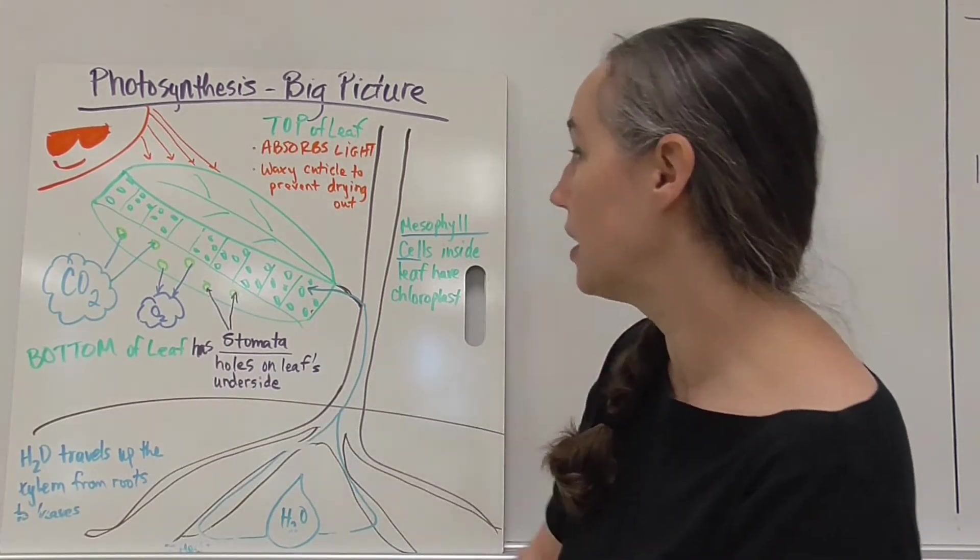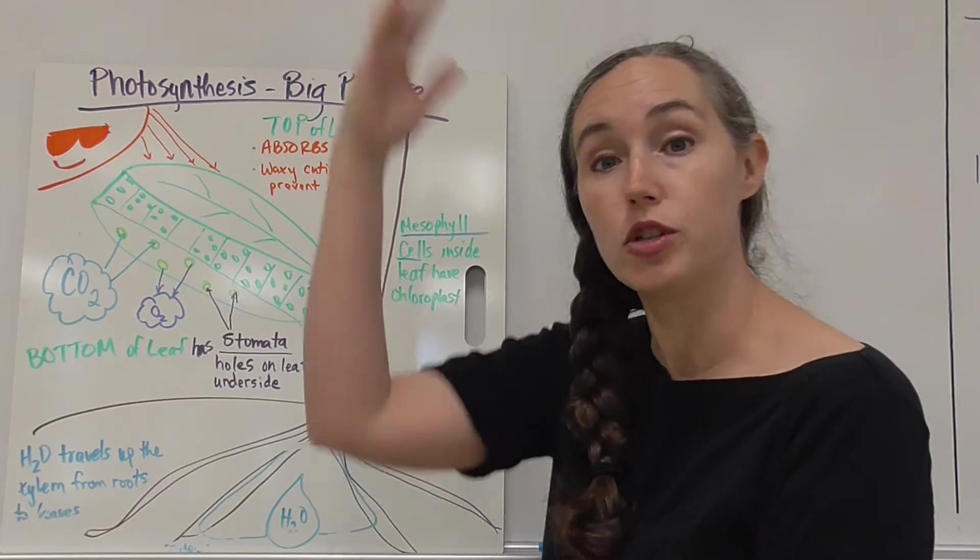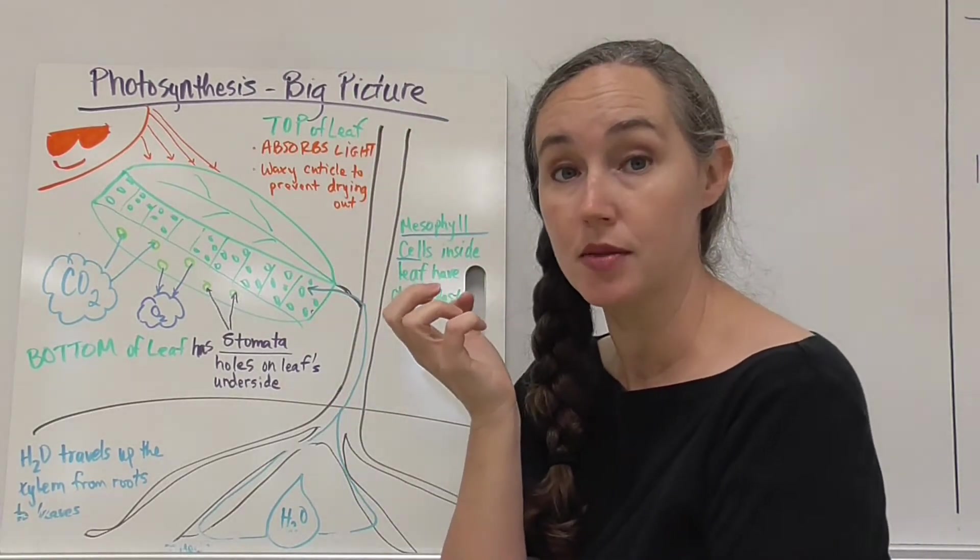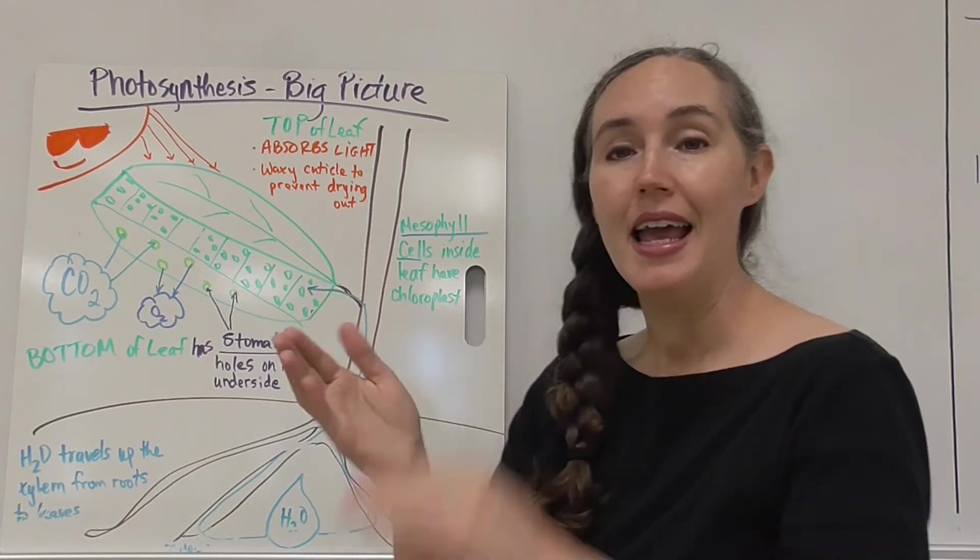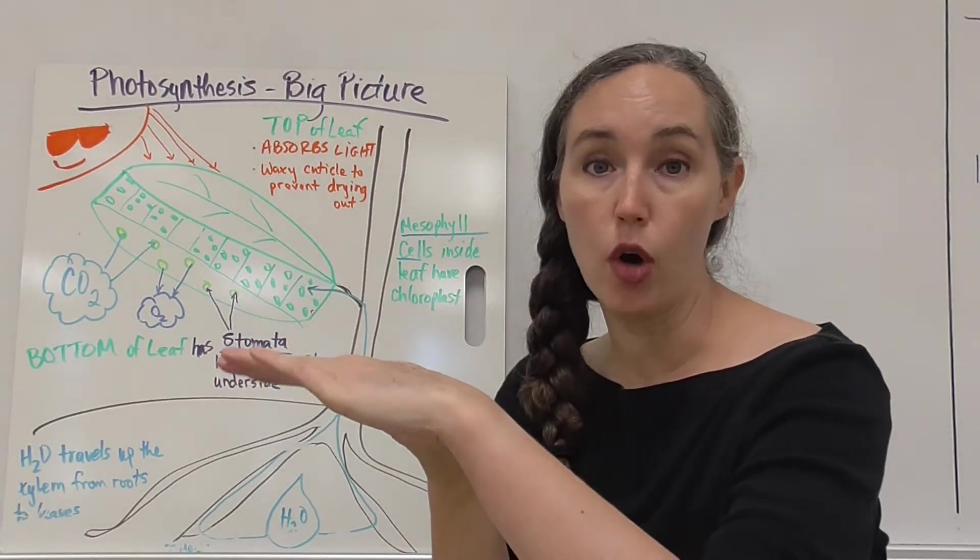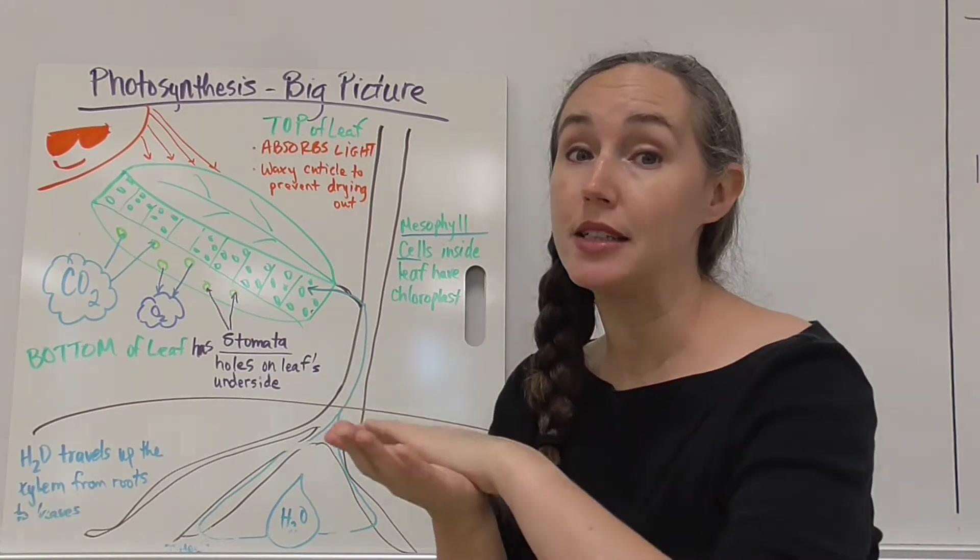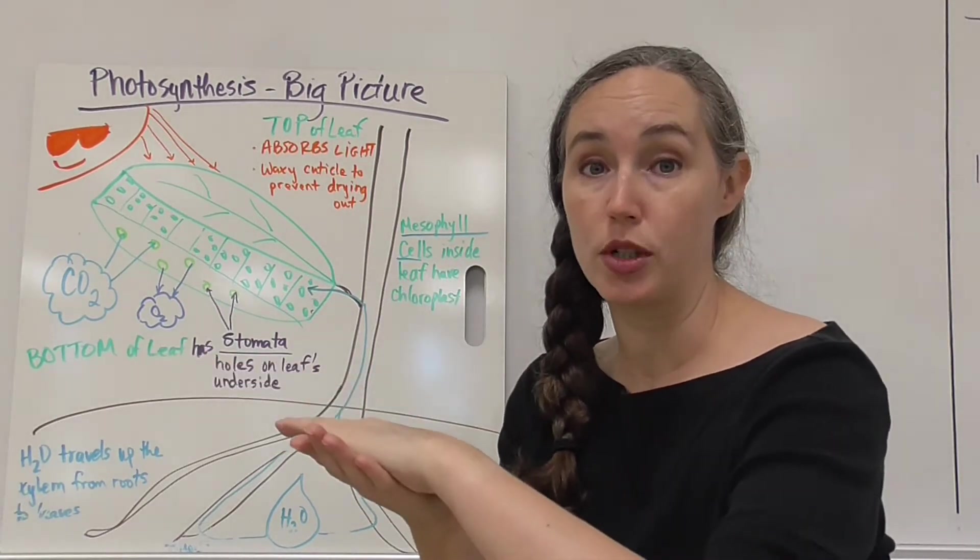We're going to get CO2 in through the leaves. Leaves have three major parts. The top of the leaf, which is where light absorption happens, is called the upper epidermis. It also has a waxy cuticle over the top of the leaf to help prevent desiccation or dehydration.